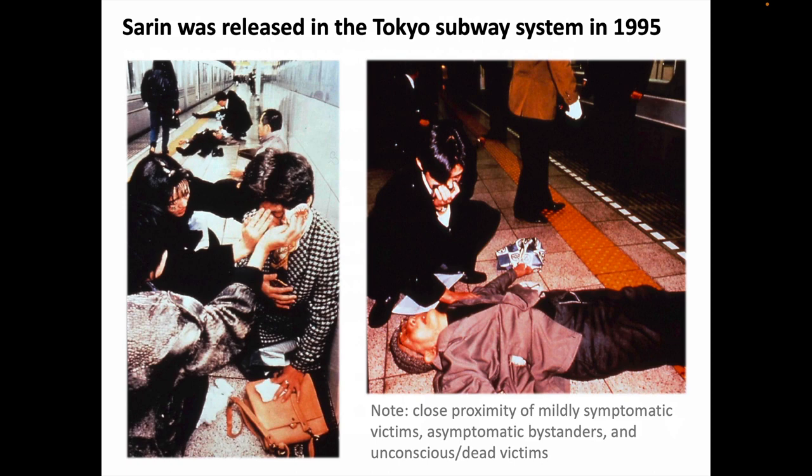A very famous nerve agent incident occurred in the Tokyo subway system in 1995, when the Aum Shinrikyo apocalyptic cult released sarin. Fortunately, they did not use a very efficient dispersal system, which limited the number of deaths to 13. Basically, they put sarin in plastic bags wrapped in newspaper, placed these bundles on the floor of subway cars and poked them open with umbrellas, allowing the sarin to leak out. Sarin is about as volatile as water, so it started slowly suffusing into the surrounding air. A more efficient dispersal system could have killed many hundreds or thousands, especially since a subway system has a relatively contained environment underground, without crosswinds and with limitations to the ventilation system.